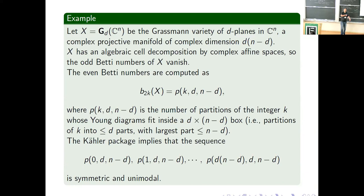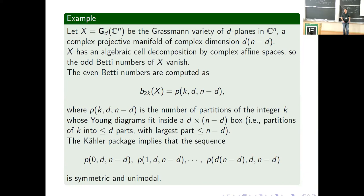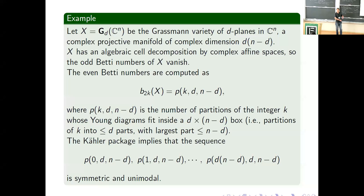Using the Kähler package for these Betti numbers you get right away that this sequence of partitions — with Young diagrams fitting in boxes of size d by (n minus d) — is symmetric and unimodal. Typically you see such problems stated backwards in combinatorics: given a finite set of numbers, show they have certain properties. The approach, already visible in Stanley's work, is to find a geometric space realizing those numbers as Betti numbers and then apply the Kähler package.